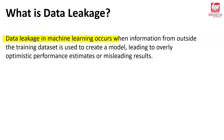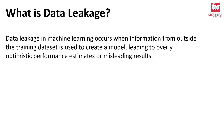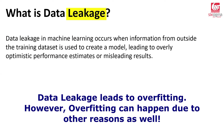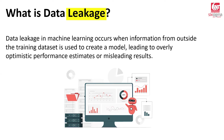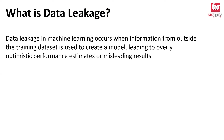Data leakage in machine learning occurs when information from outside the training dataset is used to create a model, leading to overly optimistic performance estimates or misleading results. Basically, your performance on the train set is excellent, but you are unable to sustain that performance on the test set. You might relate this to overfitting, but leakage is a mistake that happens at the data preparation stage, and that mistake leads to a situation like overfitting at a later stage.